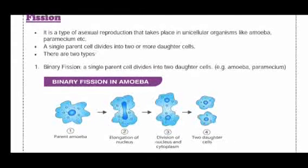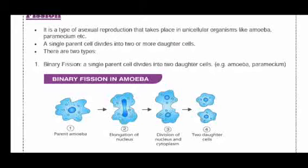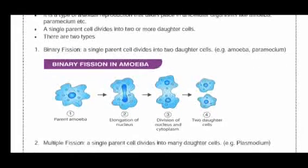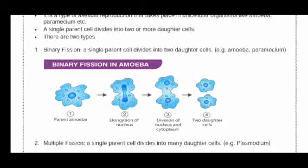Number one is binary fission. The word 'binary' refers to two. When a single parent cell is divided into two daughter cells, this is called binary fission. You can see this in amoeba or paramecium. In the figure, you can see a parent amoeba dividing into two daughter cells or two new amoeba.